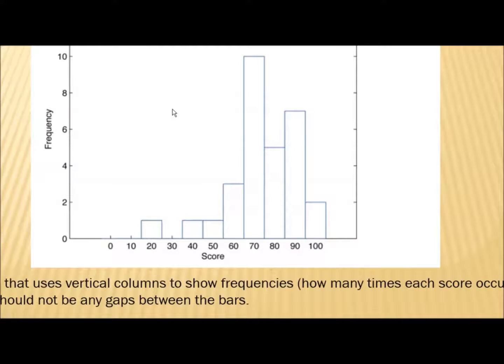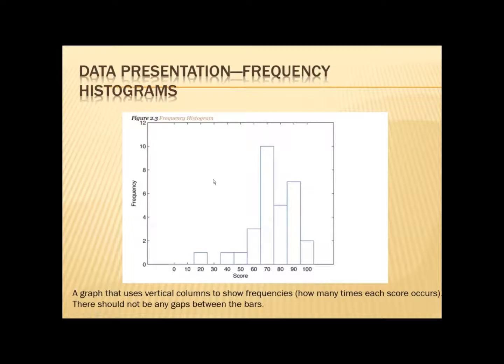You take that stem and leaf diagram and turn it on its side, and you get scores like this. This is what is called a frequency histogram—a graph that uses vertical columns to show frequencies, how many times each score occurs. There should not be any gaps between bars.